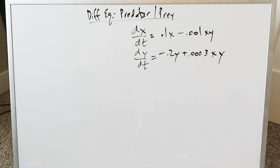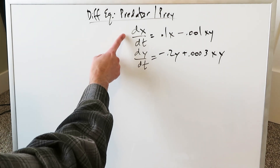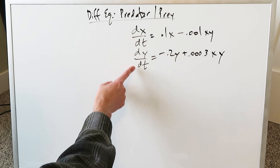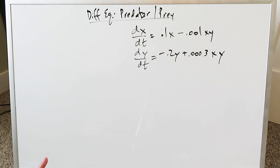Looking here at predator and prey systems, we have two equations which represent the change in population of a predator and of a prey over time. dx over dt is the change in population of either a predator or prey over time, and dy over dt likewise the same, because we don't know which of these variables x or y represents the predator and which represents the prey — and we will find that out.